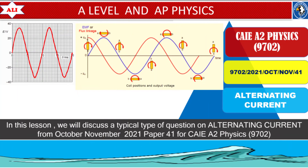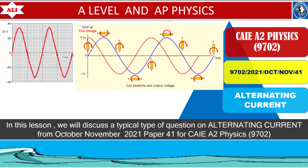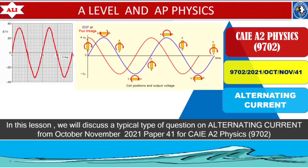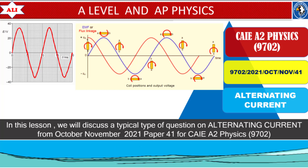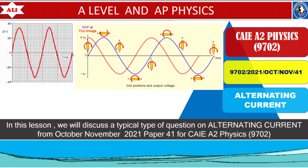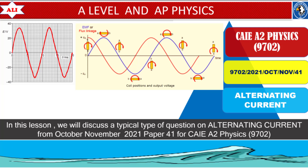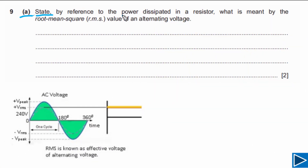Welcome to A-Level and AP Physics. In today's lesson we will discuss a typical type of question on alternating current from October November 2021 Paper 4, Variant 1. We will discuss what is meant by the RMS value of an alternating voltage, the effect of rotation on EMF value, and sketch a graph between EMF and time. For Part A we need to state, by reference to power dissipated in a resistor, what is meant by the RMS value of an alternating voltage.